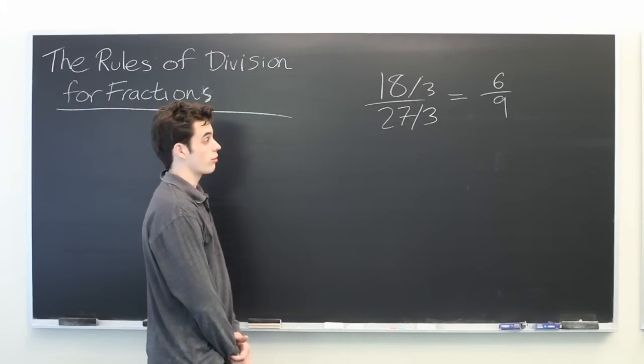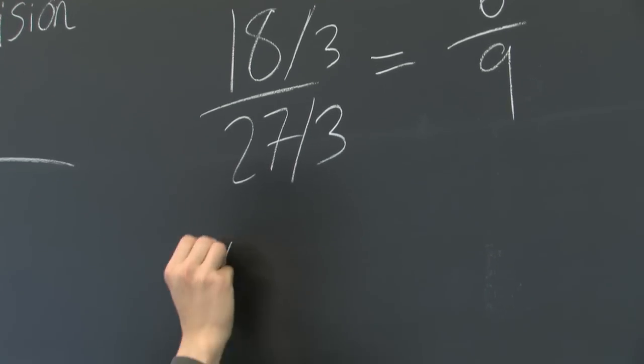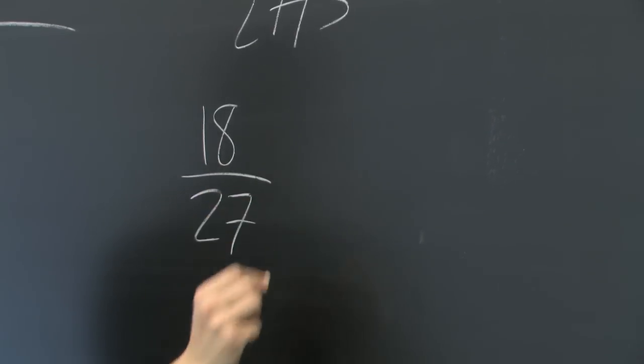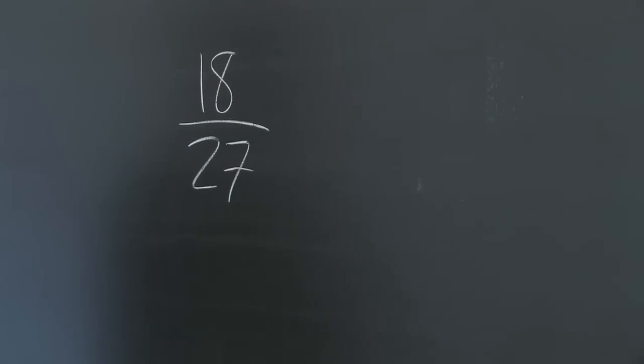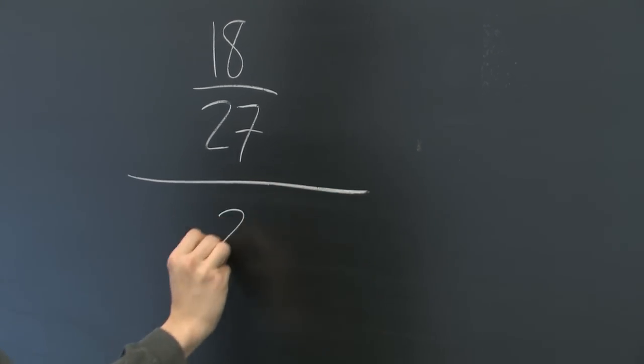Here's another division question involving fractions. Suppose that you've got the same fraction as we had above, 18 over 27. You're dividing by another fraction, say 2 thirds.